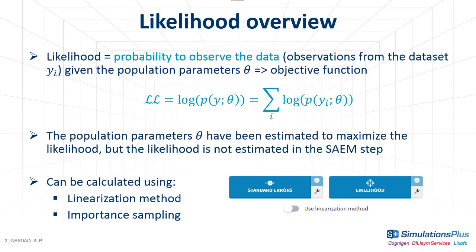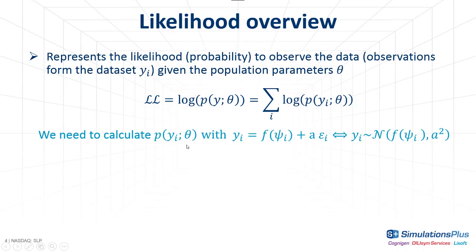Let me explain the key ideas of these two methods with an example. We need to calculate the probability to observe the data for each individual. Depending on the chosen model, the observations can for instance be described as being the model prediction, f, plus a residual error term. In this case, the observations follow a normal distribution. The probability density function of a normal distribution is easy to write, but the problem here is that the true individual parameters, ψi, are unknown.